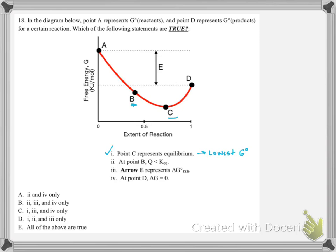The second one says at point B, Q is greater than Keq. Here's point B. It helps to note that at 0 on the x-axis that's where the reactants are, and over at 1 that's where we'd have 100% products. Point 0.5 is where we're 50-50. So at point B, we're more on the reactant side — we have more reactants. If you think of Q as products over reactants, that would tell us that Q is going to be less than Keq.